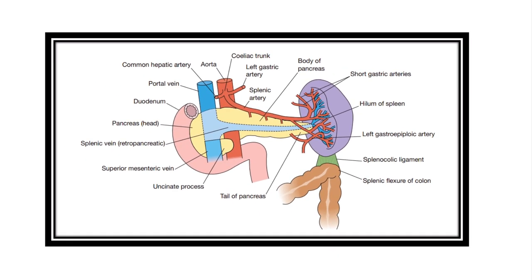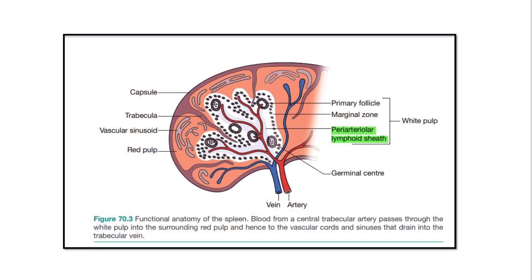Here we can see the spleen showing arterial and venous supply and normal anatomy. This is the histology or functional anatomy of the spleen. The spleen is divided into two important areas: the white pulp and the red pulp. In the white part, we can see the lymphatic sheath, which is developed from lymphocytes. The white pulp is the defensive area, containing components derived from white blood cells — lymphocytes, monocytes, eosinophils, basophils, and neutrophils. These lymphoid cells are responsible for defense in the spleen.